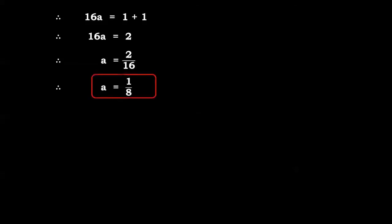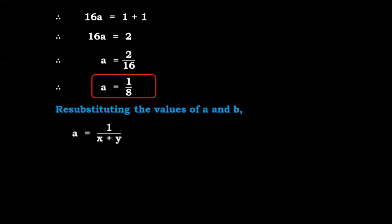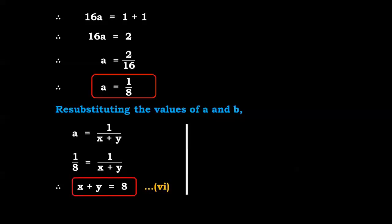Substituting b equals minus 1 upon 2 in equation number 3: 16a plus 2 into (minus 1 upon 2) equals 1. The 2s cancel giving 16a minus 1 equals 1. So 16a equals 2, therefore a equals 2 upon 16, which gives a equals 1 upon 8. Now resubstituting: a equals 1 upon (x plus y), so 1 upon 8 equals 1 upon (x plus y), giving x plus y equals 8 — equation number 6.